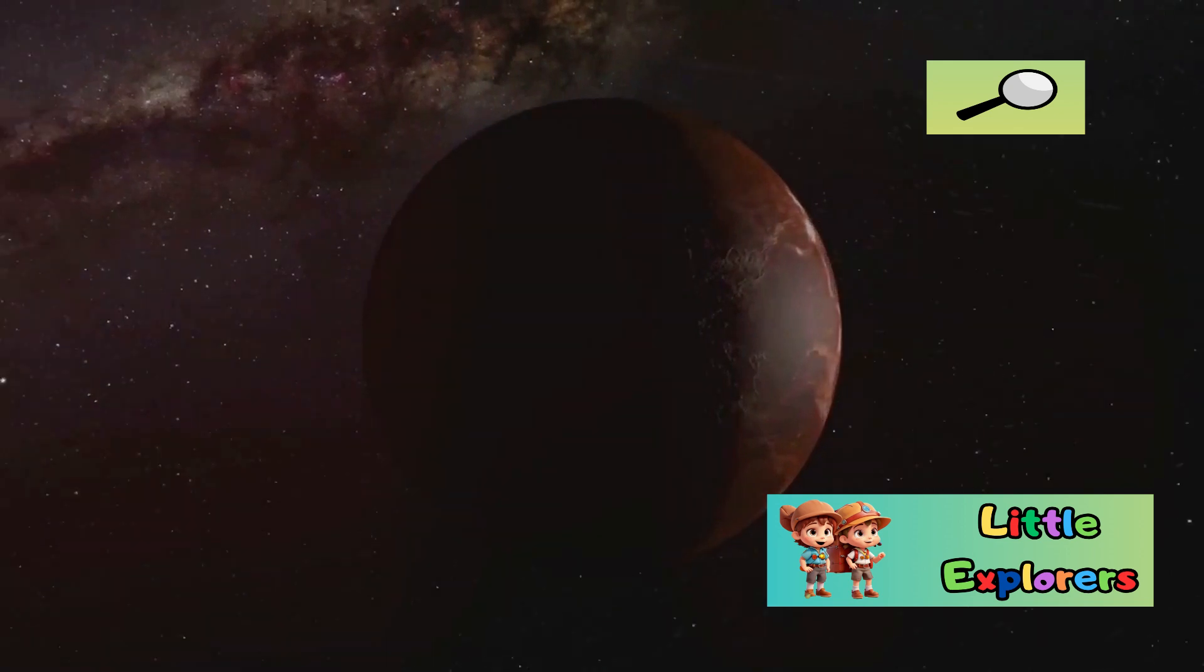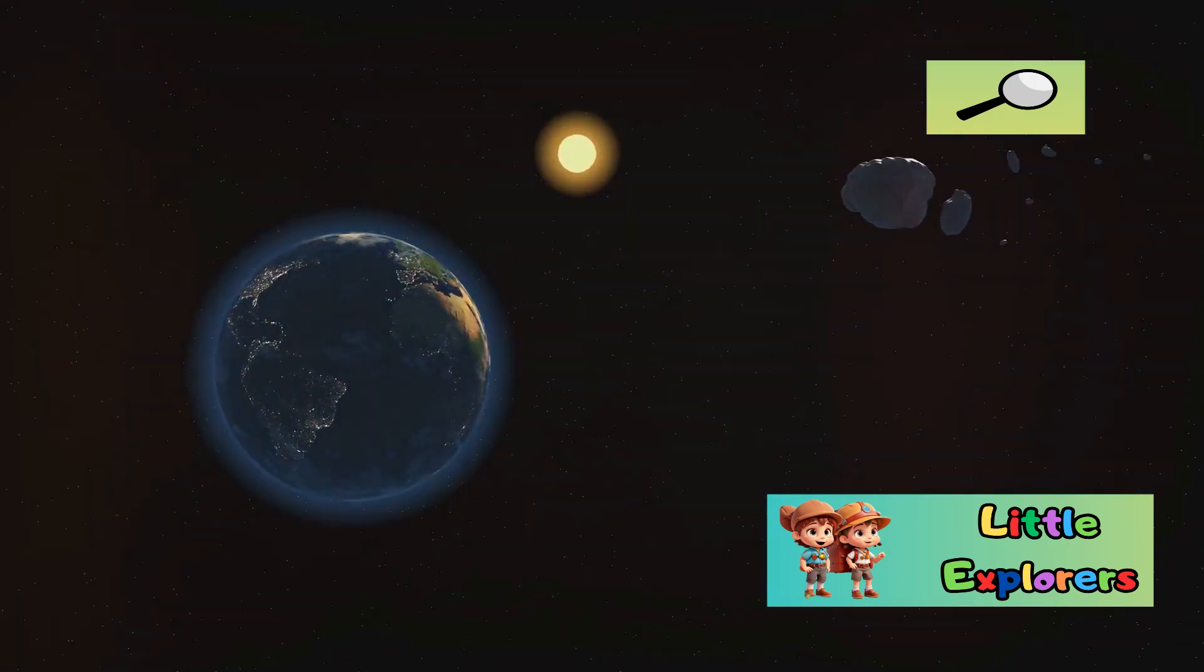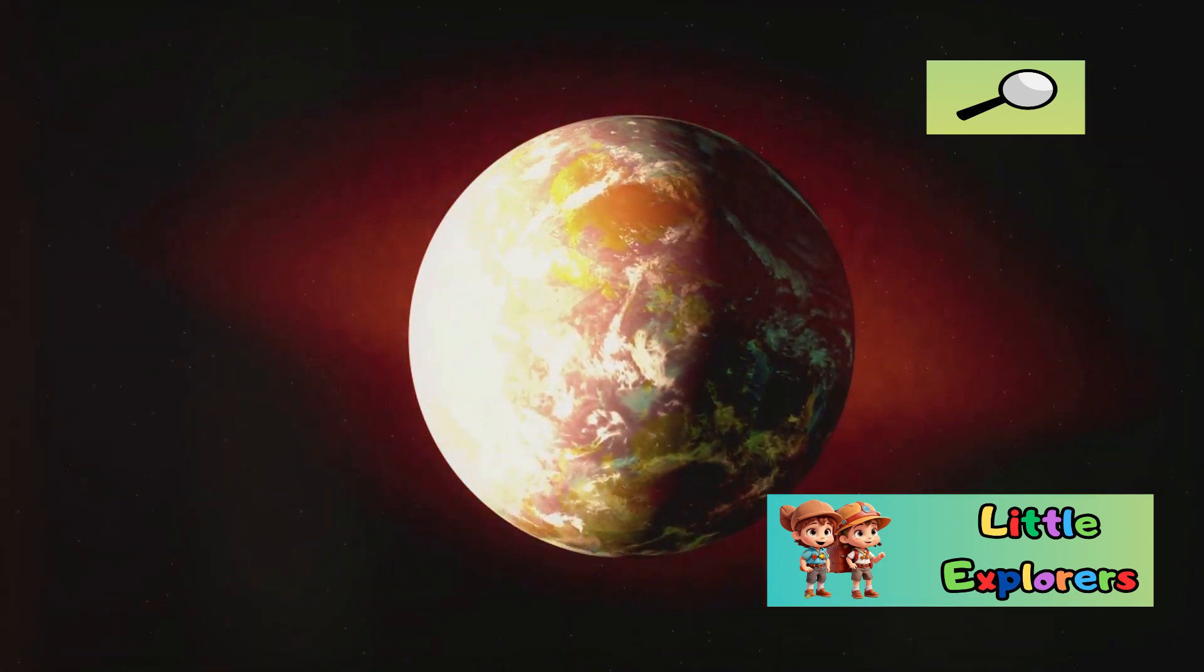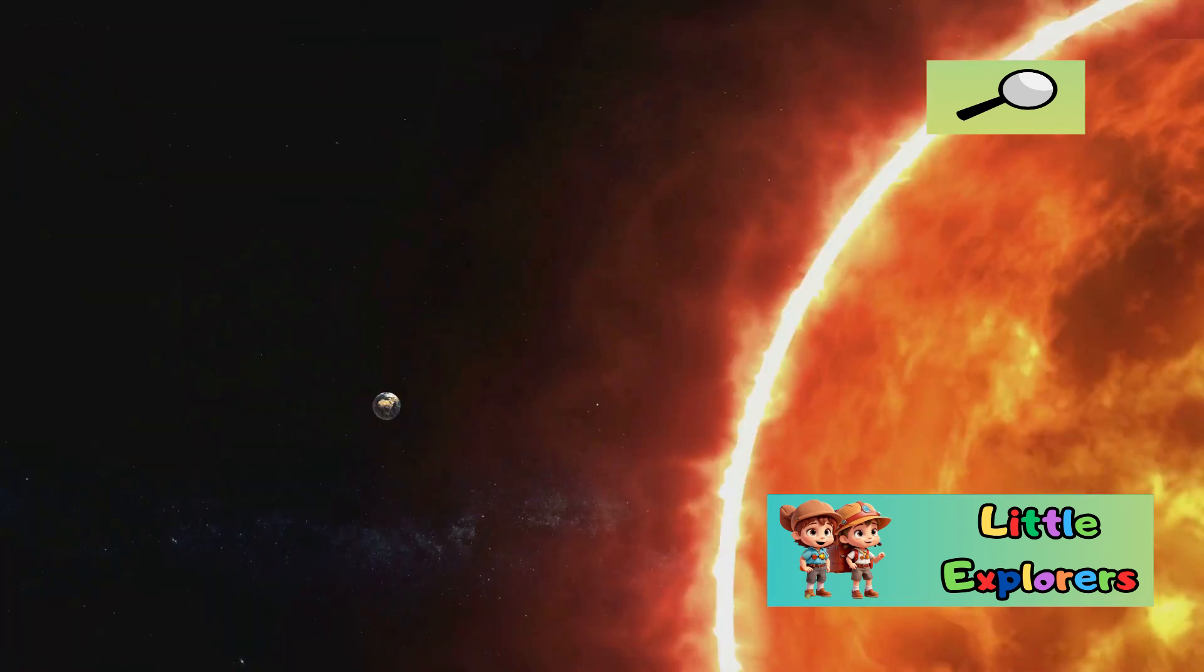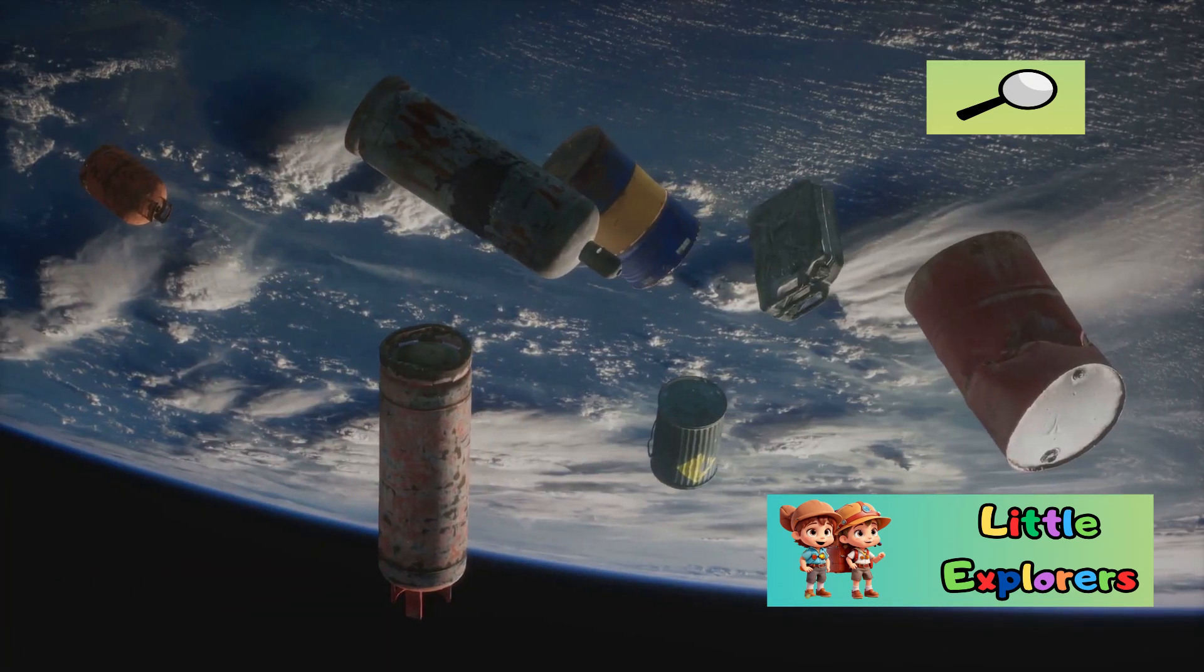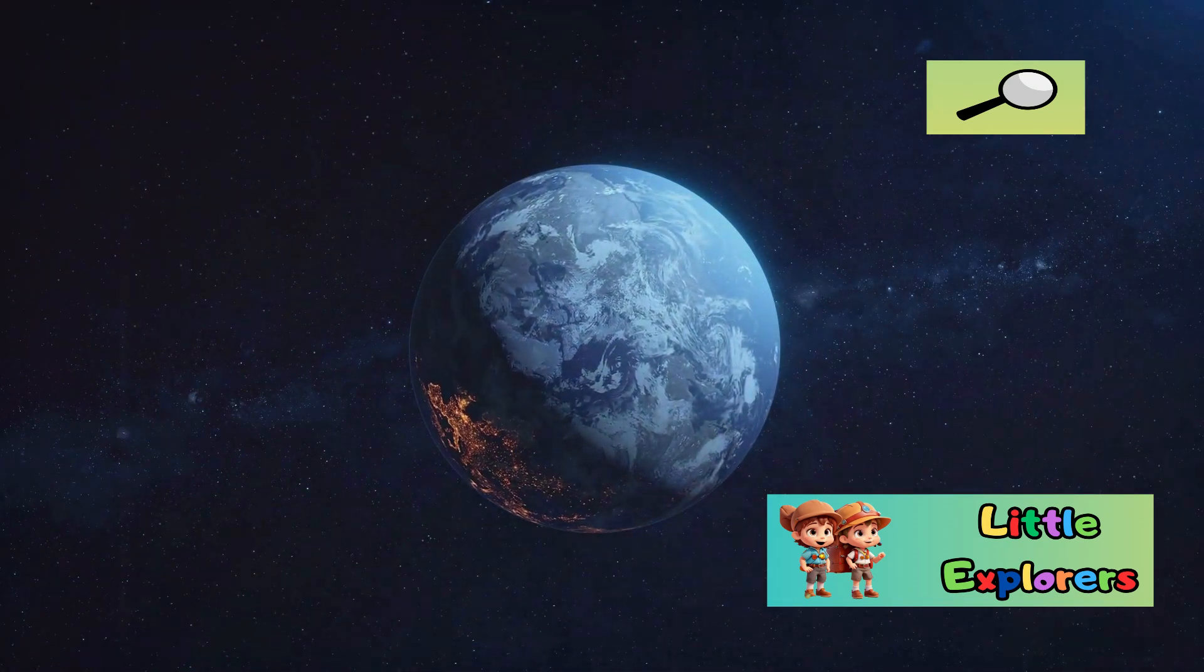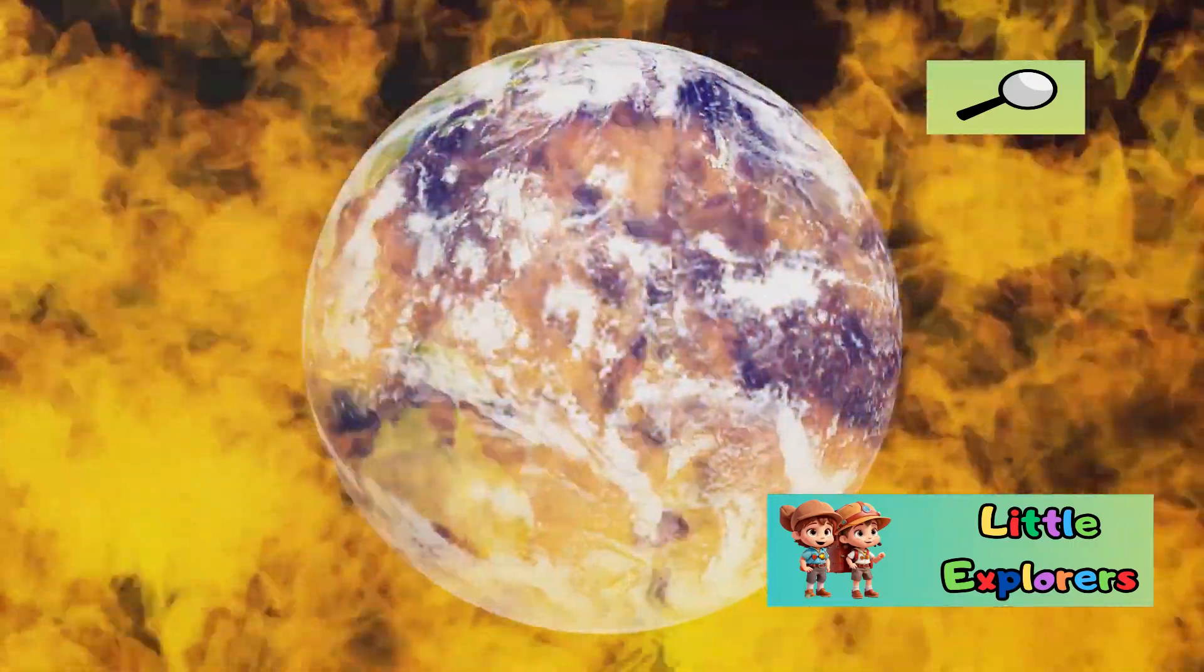Section 6. A Planetary Balancing Act. Earth's ability to support life is a delicate balancing act. The distance from the Sun, the composition of our atmosphere, the presence of liquid water, and the dynamic geology all play a crucial role in creating the conditions necessary for life to thrive. If any of these factors were significantly different, Earth would be a very different place. For example, if Earth were closer to the Sun, our oceans would boil away. If our atmosphere were thinner, we would be bombarded by harmful radiation. The delicate balance of our planet's systems is a testament to the unique set of circumstances that allowed life to emerge and flourish on Earth. Understanding this delicate balance is crucial as we face the challenges of climate change and environmental degradation. Our actions have consequences for the delicate web of life that sustains us.